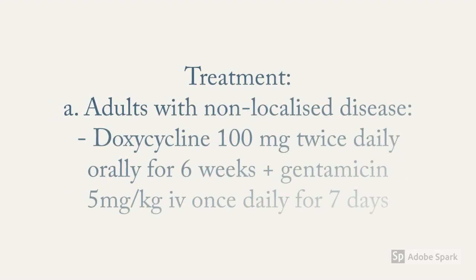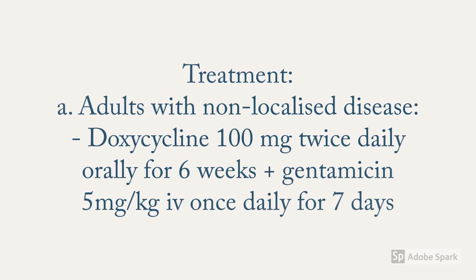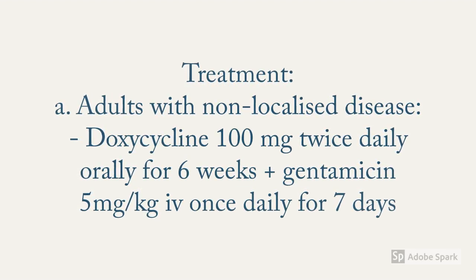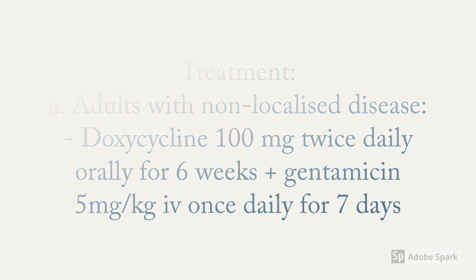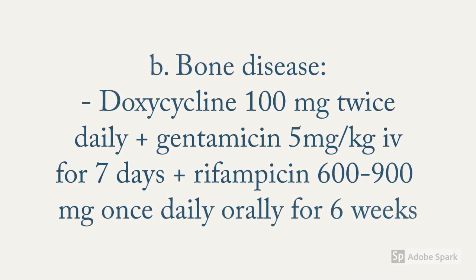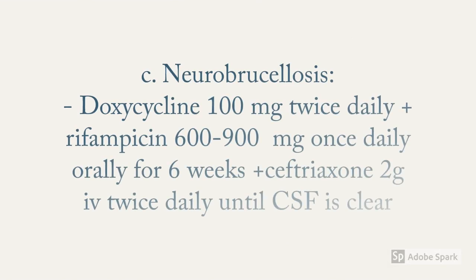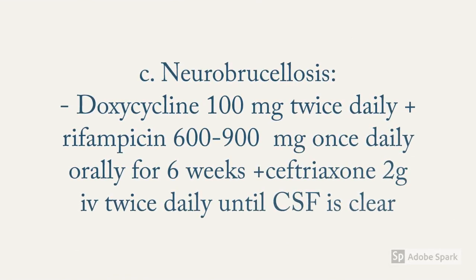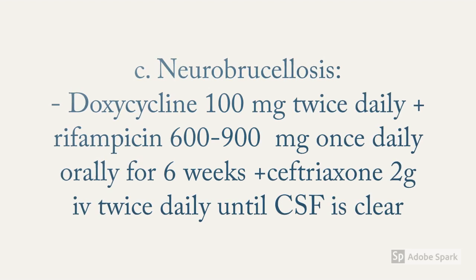Tetracyclines combined with aminoglycosides form the core of the treatment regimen for brucellosis. Adults with non-localized disease are given doxycycline 100 mg twice daily orally for six weeks along with gentamicin 5 mg/kg IV once daily for seven days. For those with bone disease, this regimen is continued with the addition of rifampicin 600 to 900 mg once daily orally for six weeks. In neuro-brucellosis, doxycycline and rifampicin are continued orally for six weeks with the addition of ceftriaxone 2 g IV twice daily until CSF is clear.